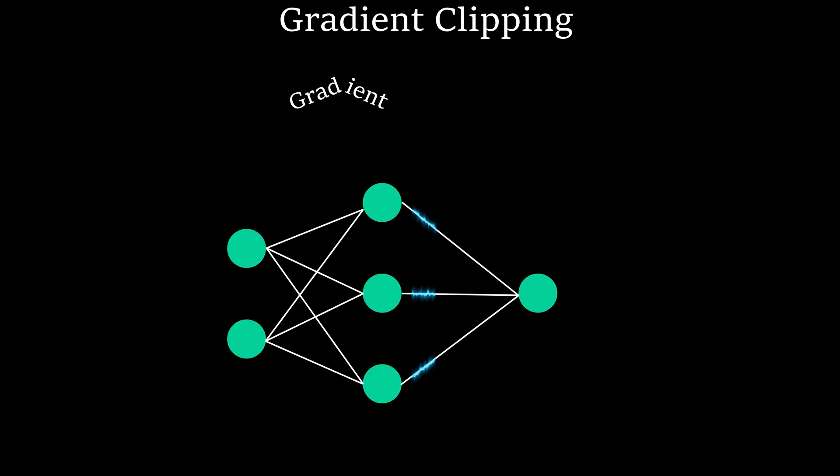But in this video, we will see how gradient clipping helps solve this problem. As the name suggests, gradient clipping is used to clip gradients during back propagation whenever they reach or go beyond a defined threshold.